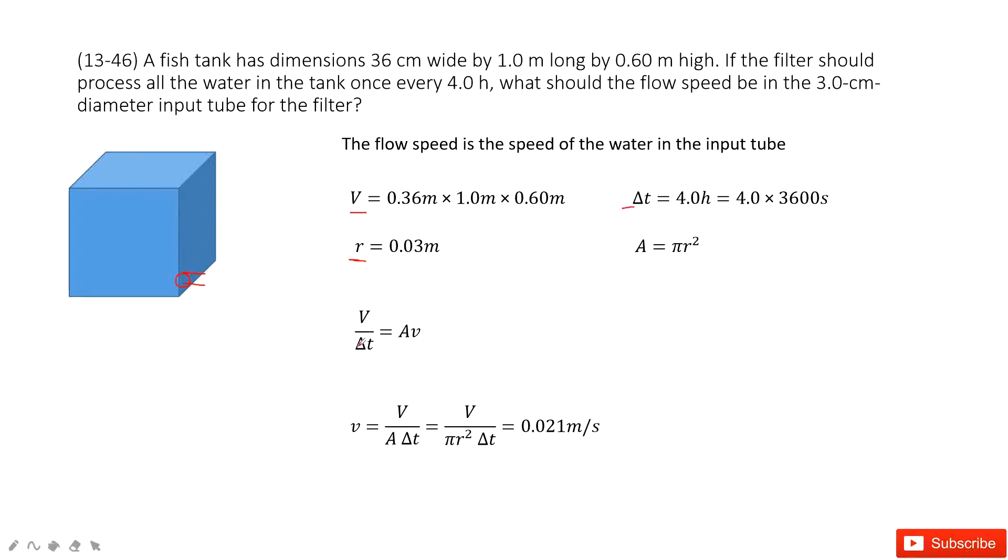V, the volume divided by delta t, equals A times v. Now we can get this velocity v. This v is just this one. Solve this equation: v equals V over A times delta t. This A is πr². Then we input the known quantities and get the final answer. Thank you.